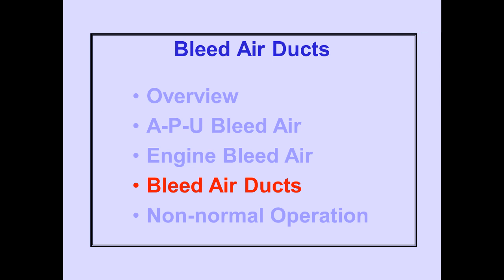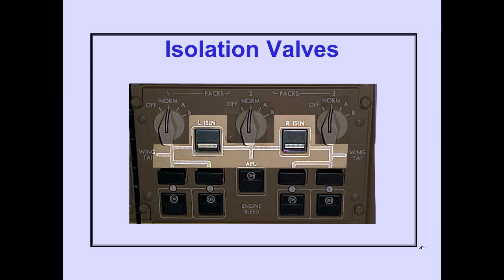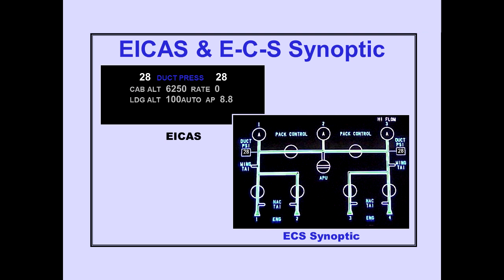Let's discuss the bleed air ducts. The ducting connects air sources to the airplane systems. Two isolation valves — left and right — are located in the ducts. Left and right duct pressure is displayed on ICAS and the ECS synoptic.